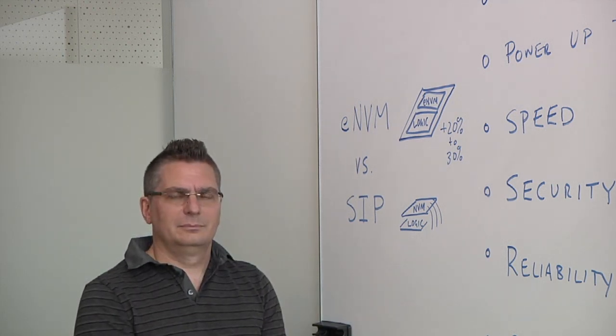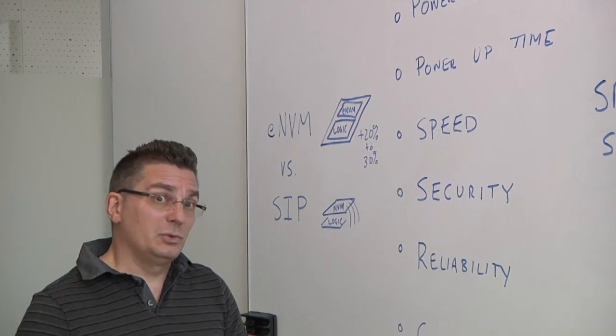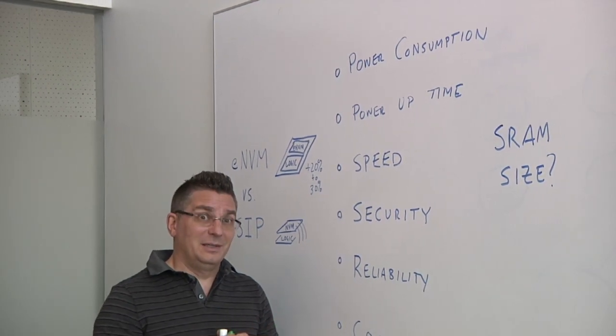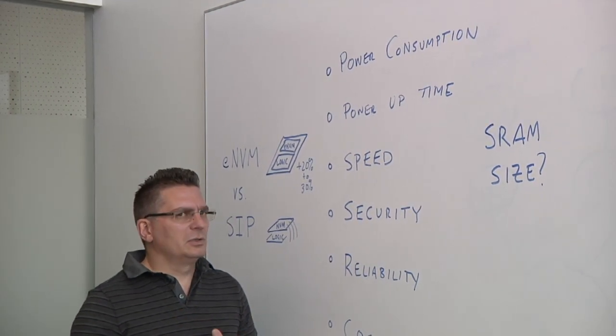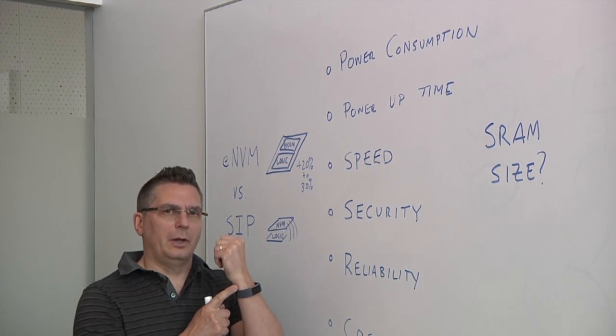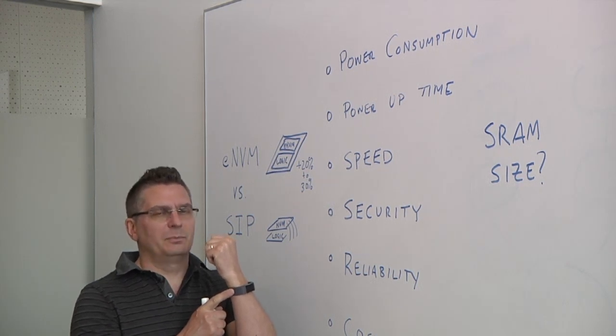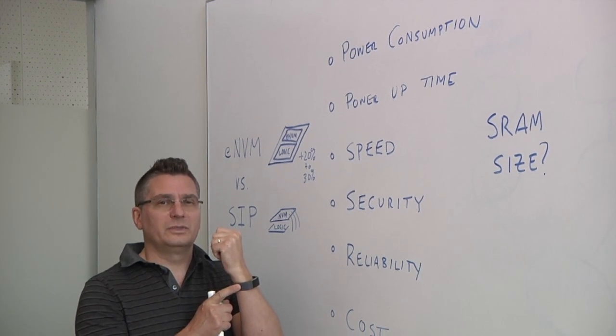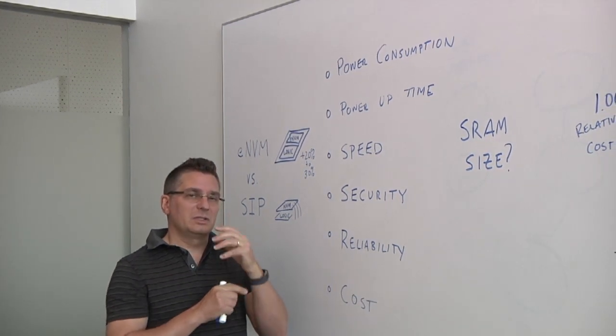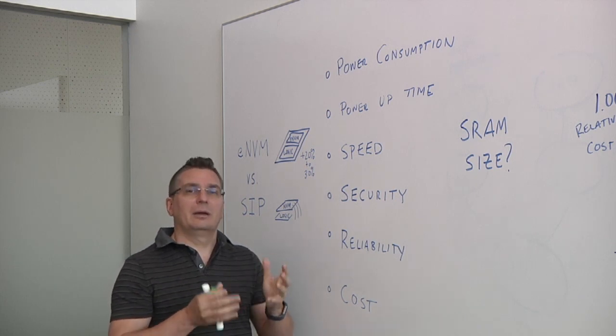So power becomes a big issue here, right? Power consumption in particular. Which one is better? If you're going into a battery powered environment like IoT definitely is, how much power you consume is going to be one of the key things. Now I wear a fitness tracker. I wear it all the time. One of the things I like about my fitness tracker is I only have to charge it up about once a week or once every two weeks. Now some other devices you wear on your wrist consume a lot more power, and you have to charge it up maybe every night.